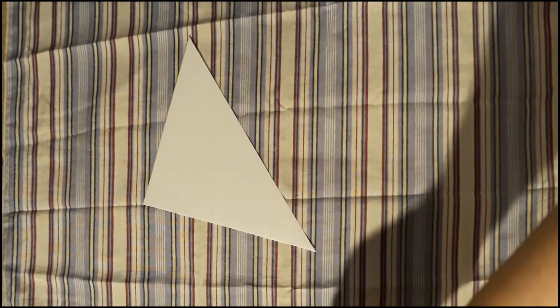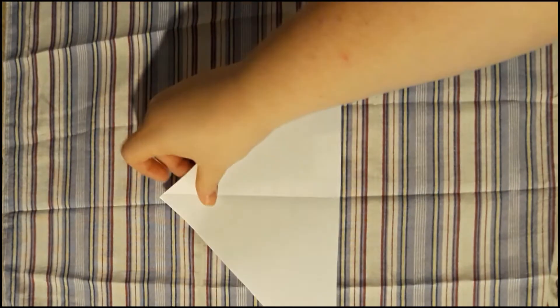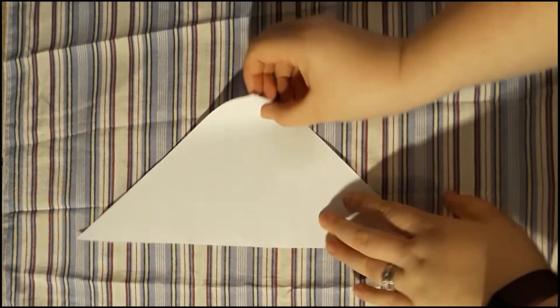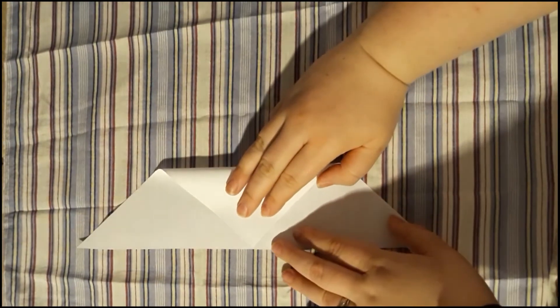Set both of those triangles to the side for now. Grab your other larger triangle, and fold the apex of the triangle toward the base, making sure the tip lines up with the crease.